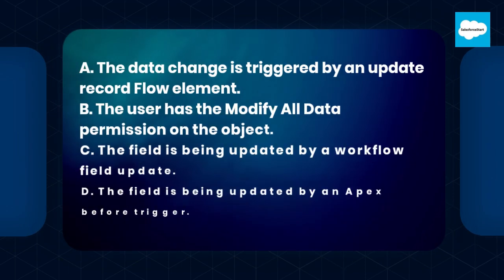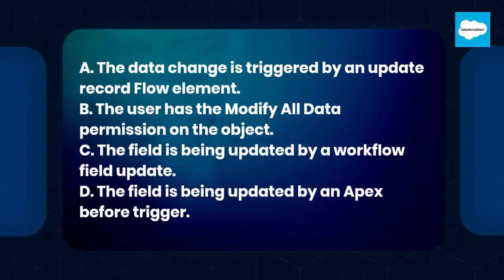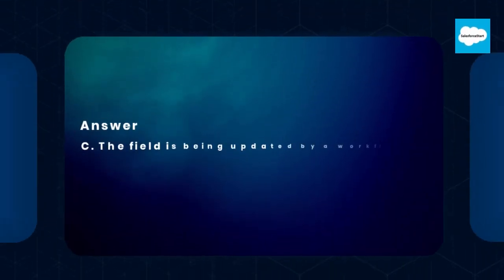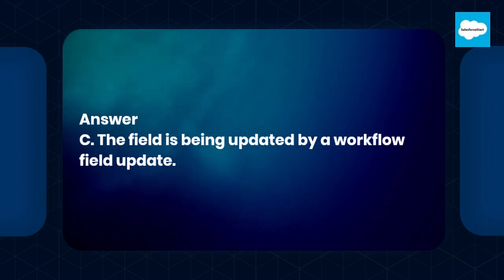A. The data change is triggered by an update record flow element. B. The user has the modify all data permission on the object. C. The field is being updated by a workflow field update. D. The field is being updated by an Apex before trigger. Answer: C. The field is being updated by a workflow field update.